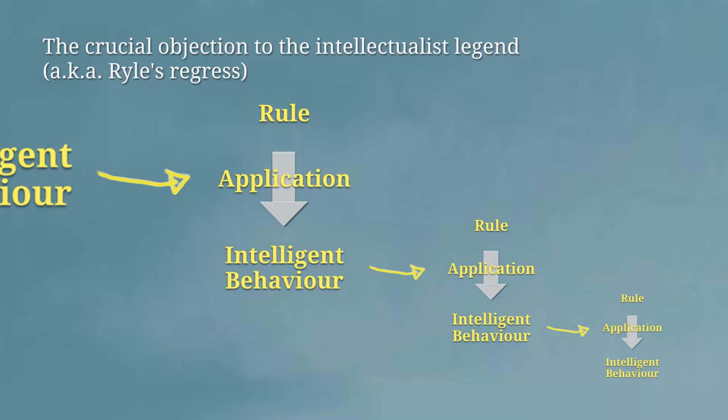So the crucial objection that Ryle offers to the intellectualist legend is one that says, in order to apply even the simplest rule, you'd have to apply uncountably many rules in the process. And that seems incredibly implausible as an account of what happens when a person moves their chess piece effectively and within the rules, or speaks grammatically, or listens empathetically, or distinguishes one bird from another. That all seems like it puts much too much pressure on intellectual operations to explain relatively straightforward competencies, skills, and in some cases, even expertise.